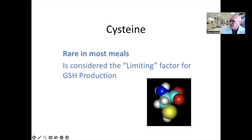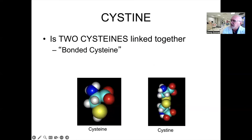Glutathione is made in your cell, and only specific forms of cysteine that are biologically active can contribute to this. Let's also look at another amino acid: cystine. Please note the difference in spelling and pronunciation compared to cysteine. Cystine is two cysteine molecules linked together by a disulfide bond. This makes cystine a source of cysteine — cystine is a source of cysteine.